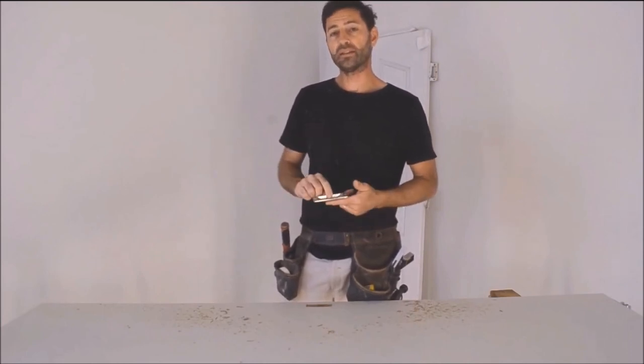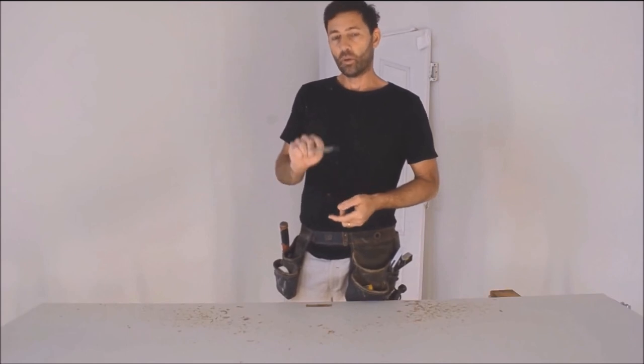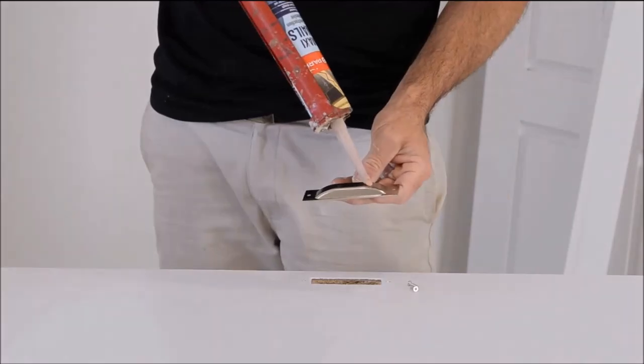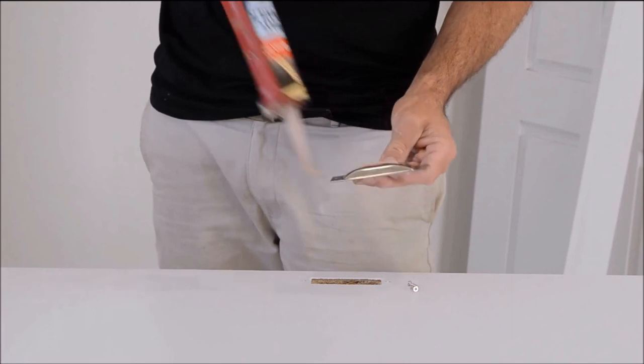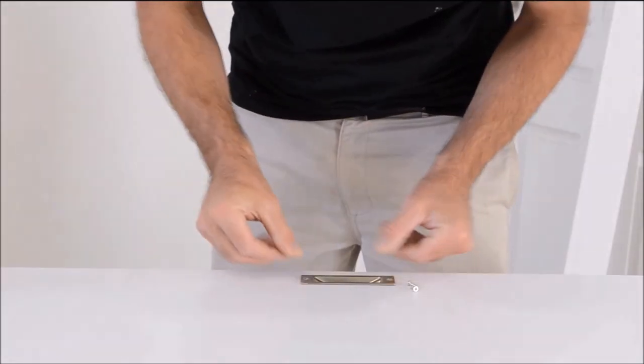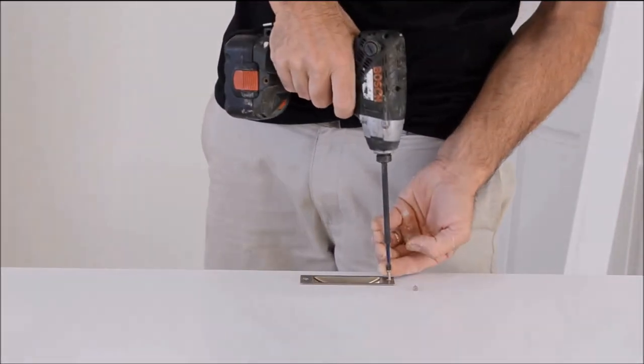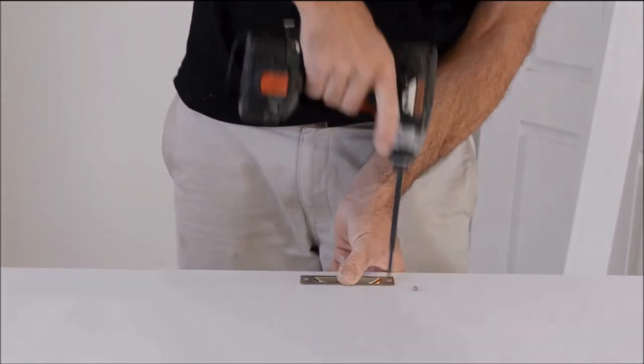Once the door's painted and paint's dried, we're going to reinstall this door hardware, these recessed door handles. I like to put a little bit of construction adhesive, and I've heard you can use silicon, underneath the door handle before we screw it into place. It gives it a nice strong bond.